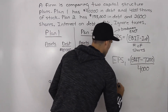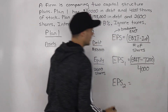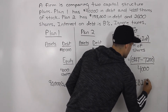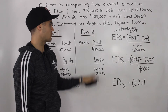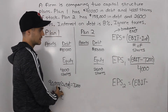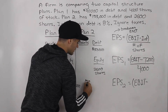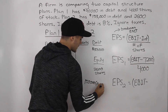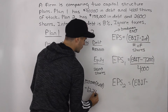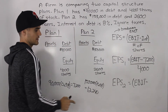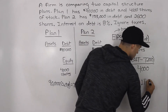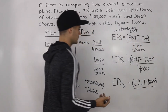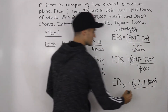For plan two: we start with EBIT, subtract the interest under plan two. The interest is $153,000 times 8% = $12,240. So we subtract $12,240, then divide by the number of shares under plan two, which is 2,600.